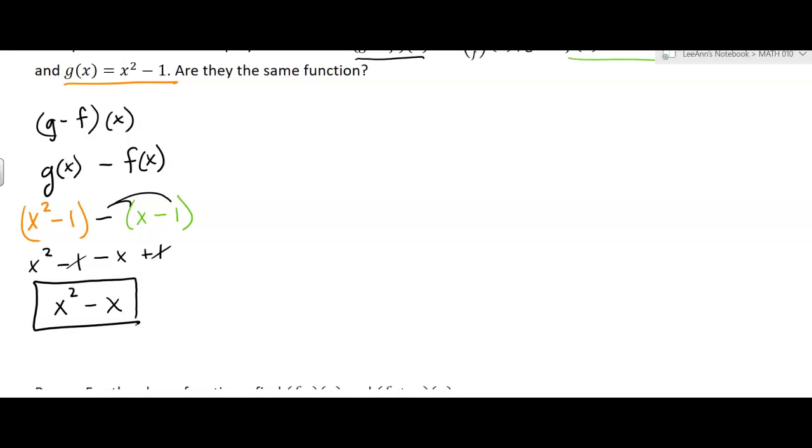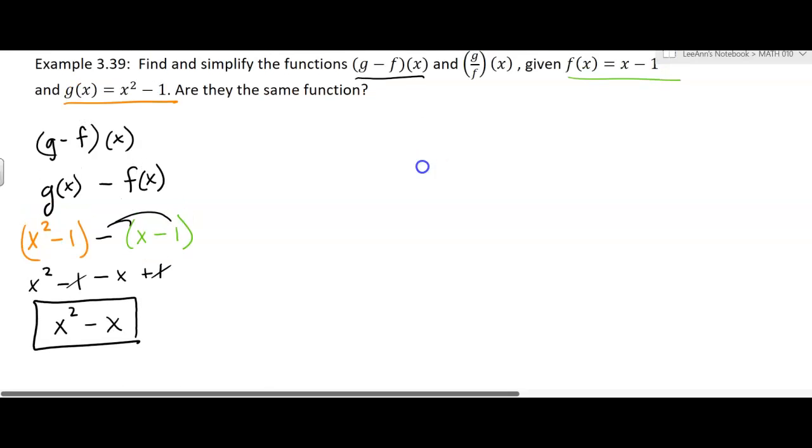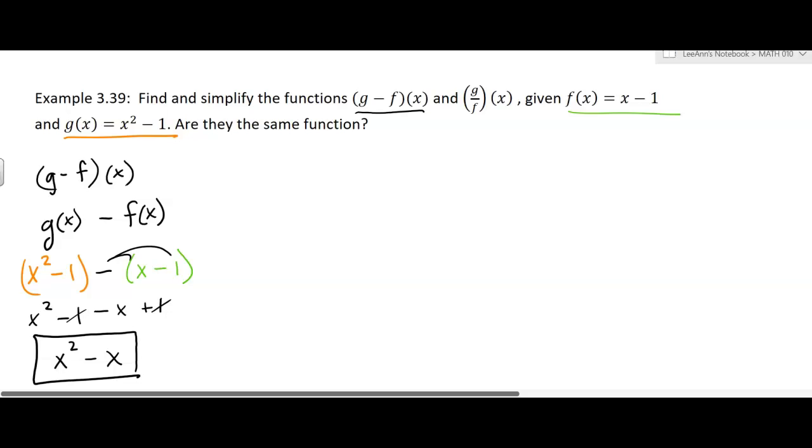So we usually leave our answer if it's a polynomial in simplest polynomial form. Okay, so there's g minus f of x. The other one, I've lost it, is g divided by f of x. And we know that's going to equal g of x divided by f of x.